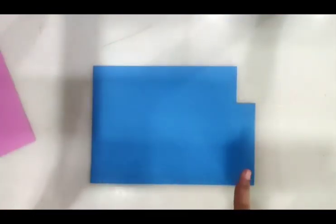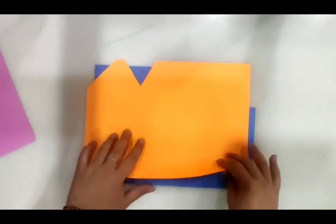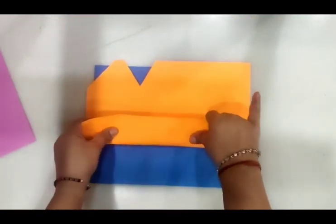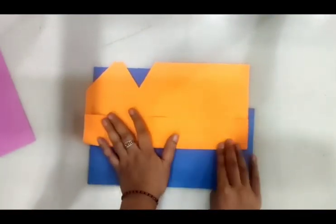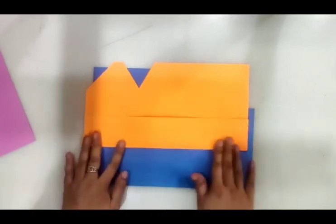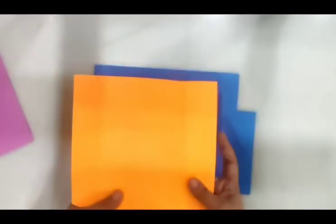Before we start making borders, we must ensure that we use the right color combination to make the border look bright and attractive. Here I am taking a blue sheet and I'll be making a border with the help of orange color. That will be a good combination.